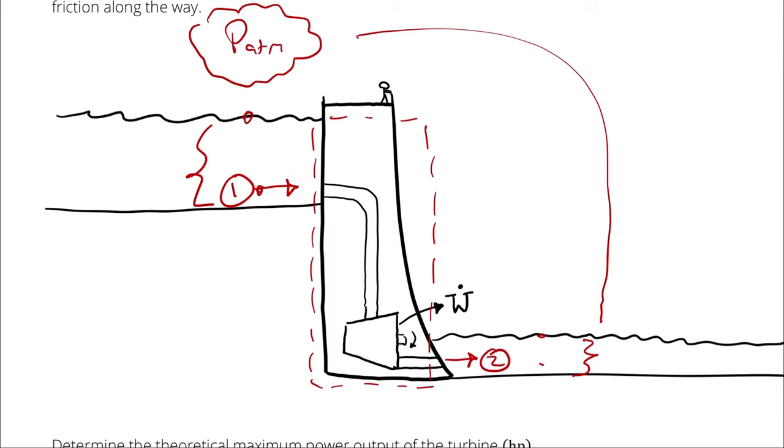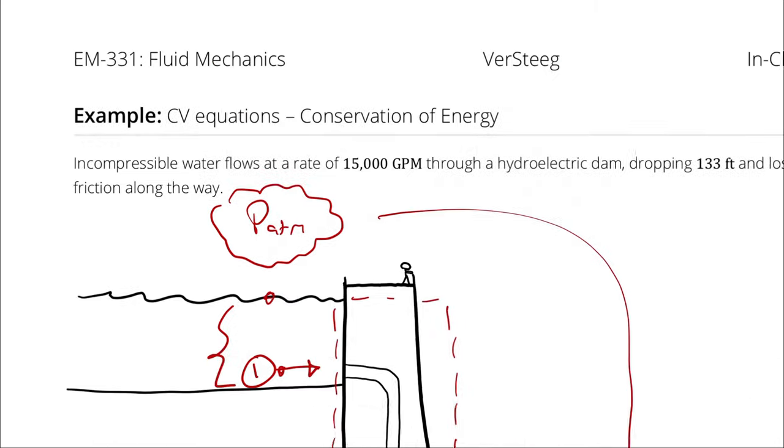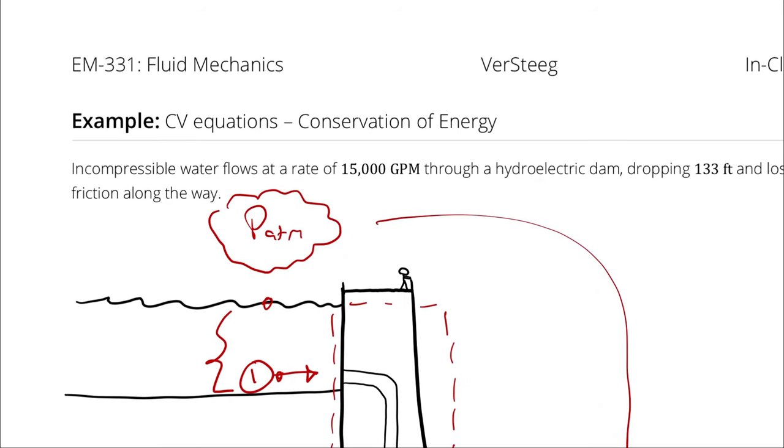You could also come at this assumption by thinking about the inlet and outlet pipe. If we had the same mass flow rate at state one and state two, and we've assumed incompressible flow, therefore the density at one and two is the same, that means we must have the same volumetric flow rate at state one and state two. That same volumetric flow rate is 15,000 gallons per minute.